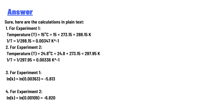For experiment 2: temperature T is 24.8°C. Converting: 24.8 + 273.15 = 297.95 K. Therefore, 1/T = 1/297.95 = 0.00336 K⁻¹.